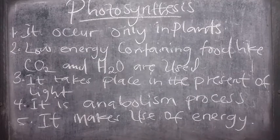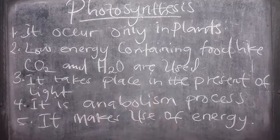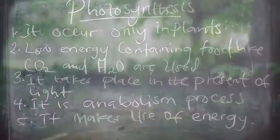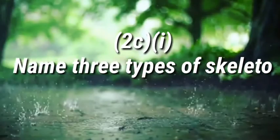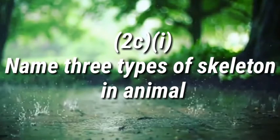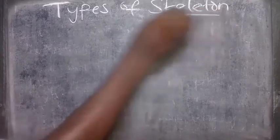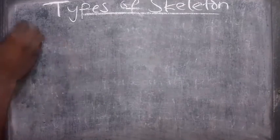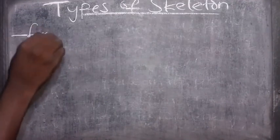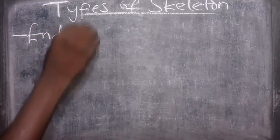Question 2: Name three types of skeleton in animals. The three types of skeleton are endoskeleton, exoskeleton, and hydrostatic.